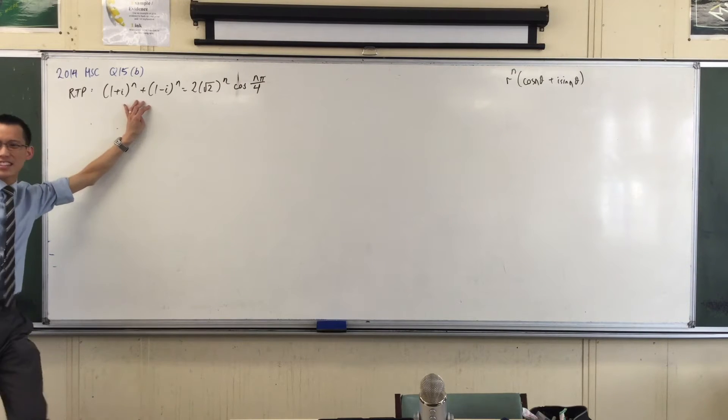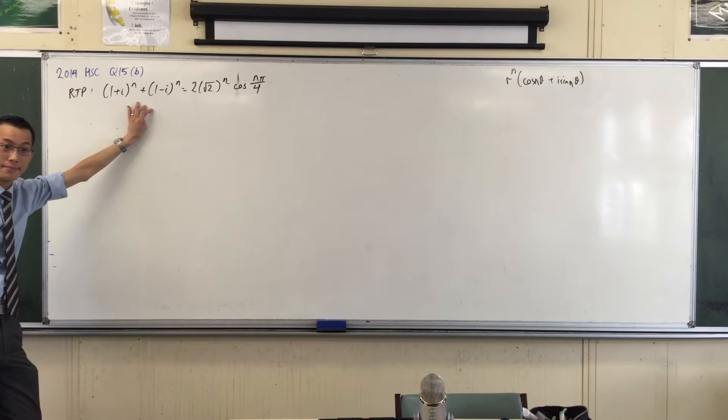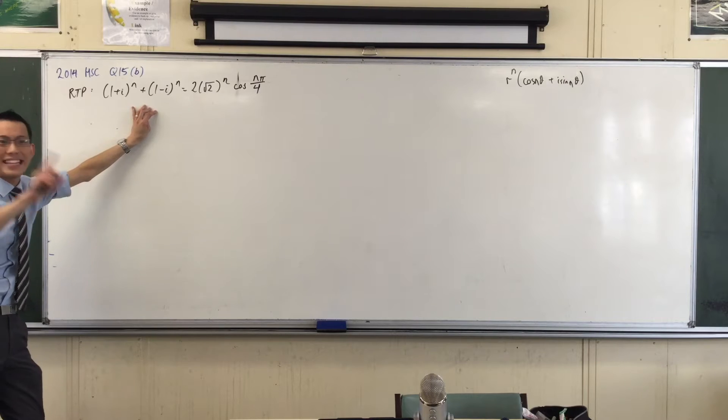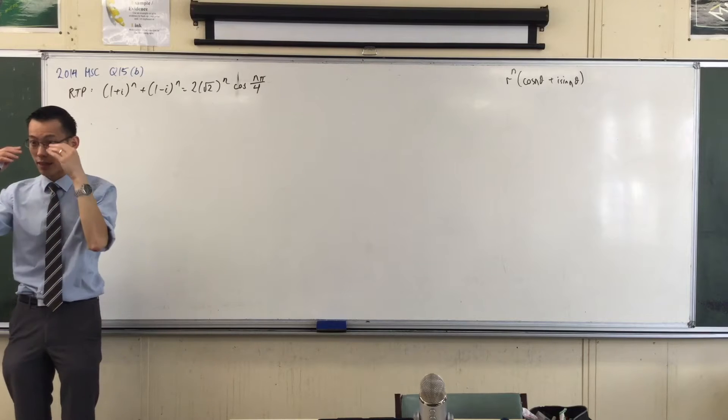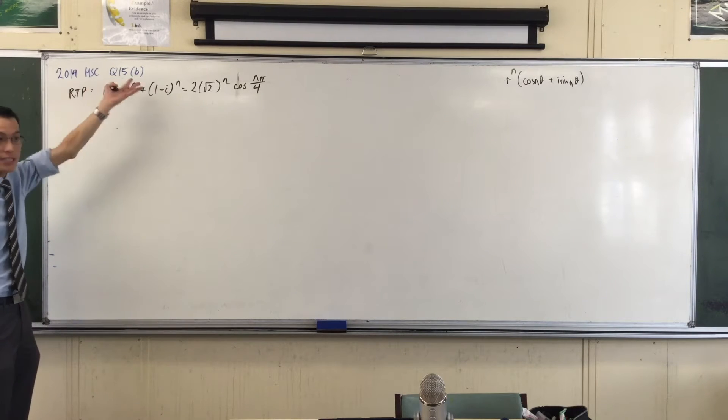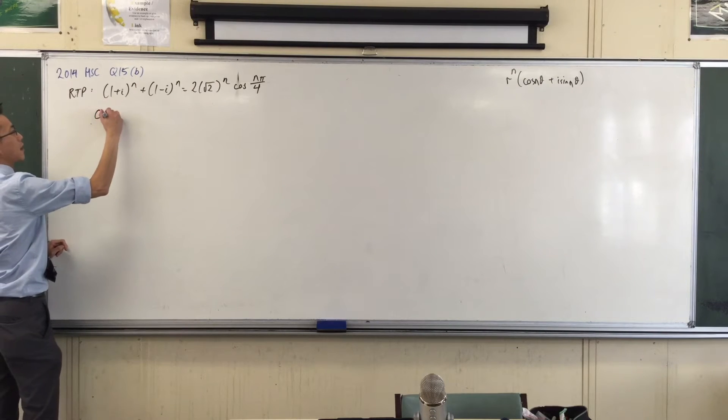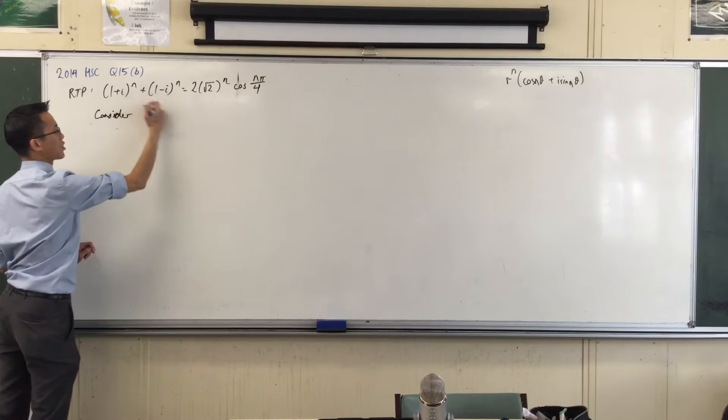But when you go look at this left-hand side, what's the problem? It's in rectangular form. So first, like you remember I said to you, you've got to think about how you go through this. The first thing you obviously have to do is put these into polar form so you can work with them. So let's do that. Consider, let's have a look at 1 plus I.